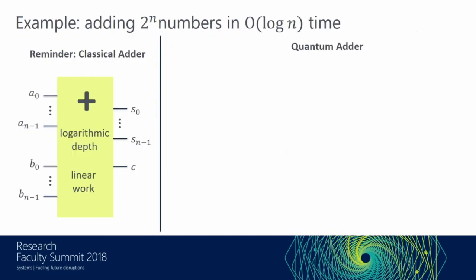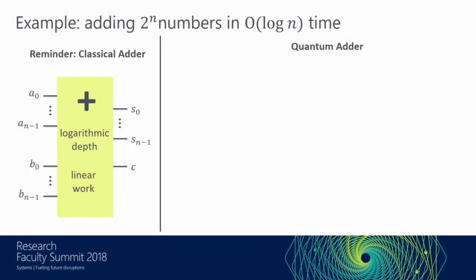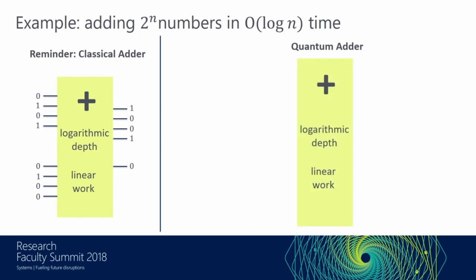To relate to classical computer scientists, let's look at an adder. I believe everybody knows what an adder is — I see many of my architecture friends in the audience. Here we have an adder that takes two numbers A and B and produces a sum and a carry bit. This adder has logarithmic depth and linear work. I can tell you that I can take any classical circuit and translate it to a quantum circuit that can work on these superpositions with a linear overhead. In this particular case, we can construct a quantum adder that has logarithmic depth and linear work.